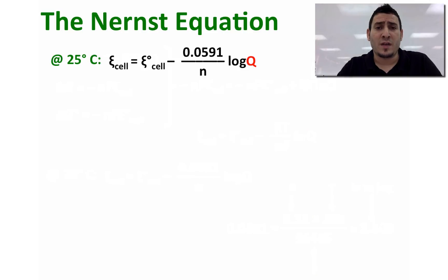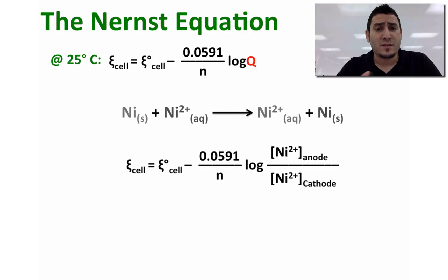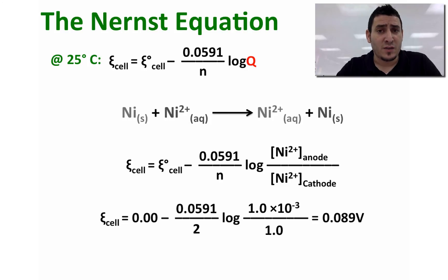Using Nernst equation now, we can calculate the cell potential, where Q is equal to the concentration of nickel at the anode divided by the concentration of nickel at the cathode. Replacing these concentrations by their initial values, the 1 molar and the 1.0 times 10 to the power minus 3 molar, this will give us the cell potential, which is equal to 0.089 volt.